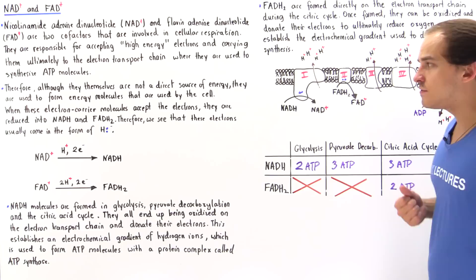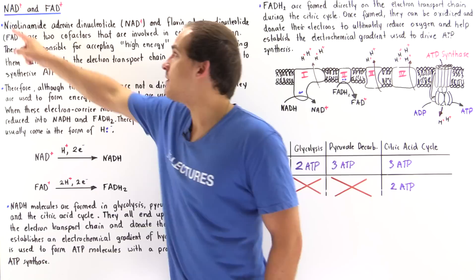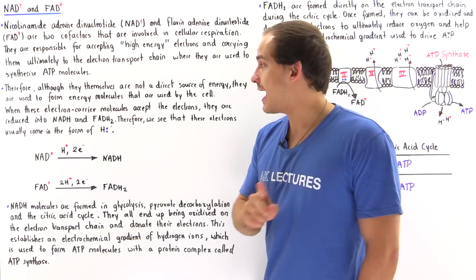When these electron carrier molecules accept electrons, they are reduced. The fully reduced form of NAD+ is NADH, and the fully reduced form of FAD+ is FADH2.